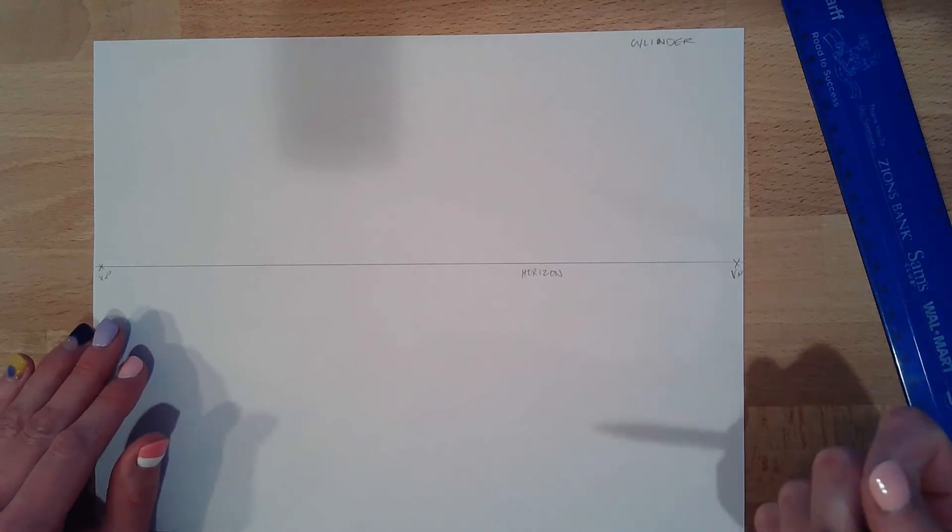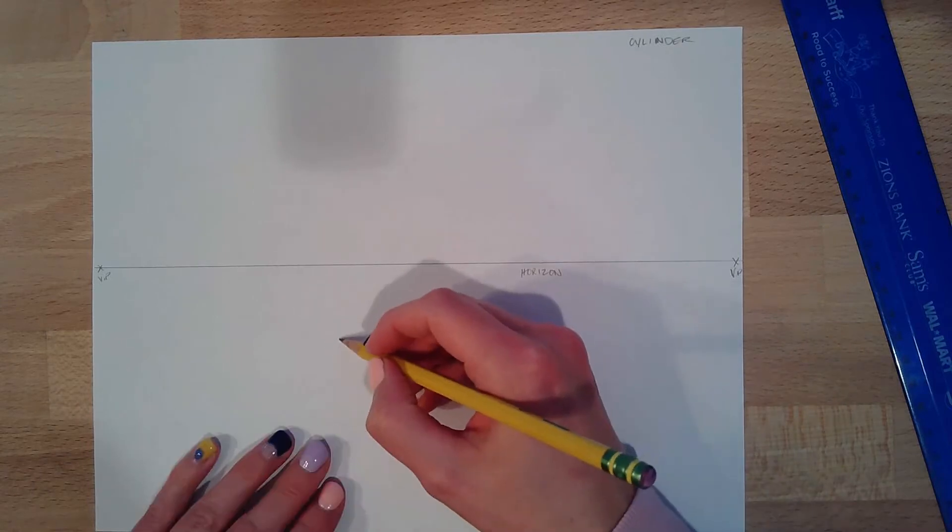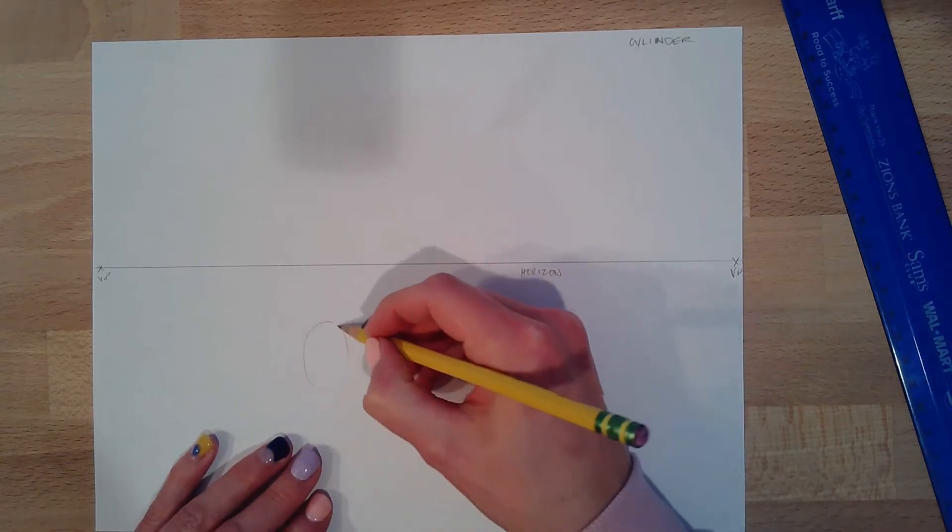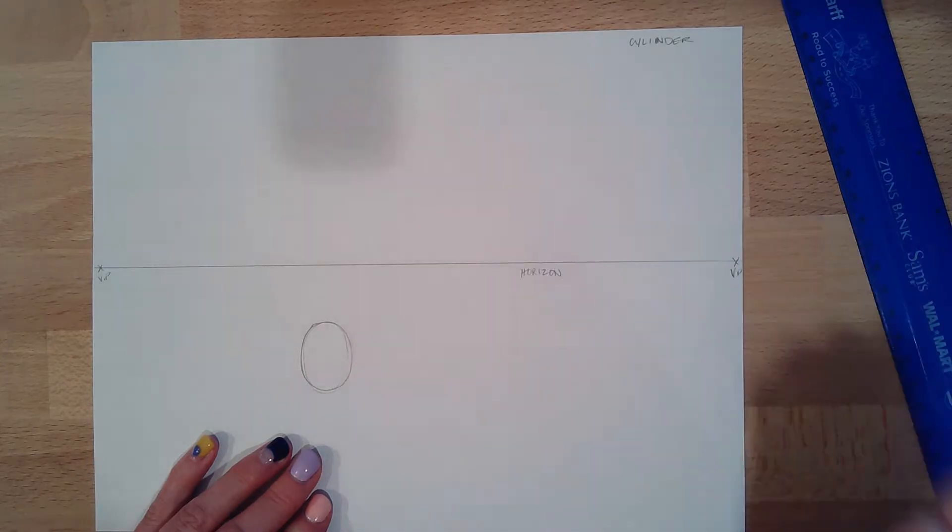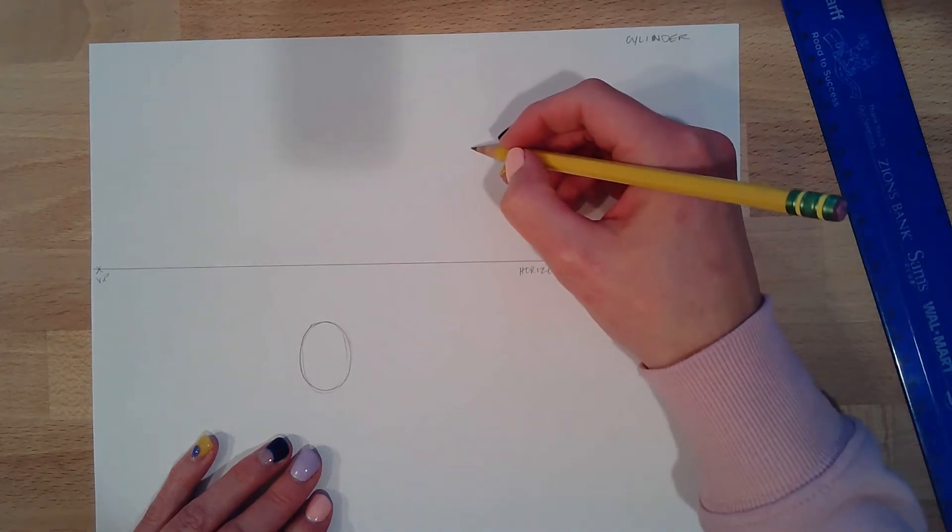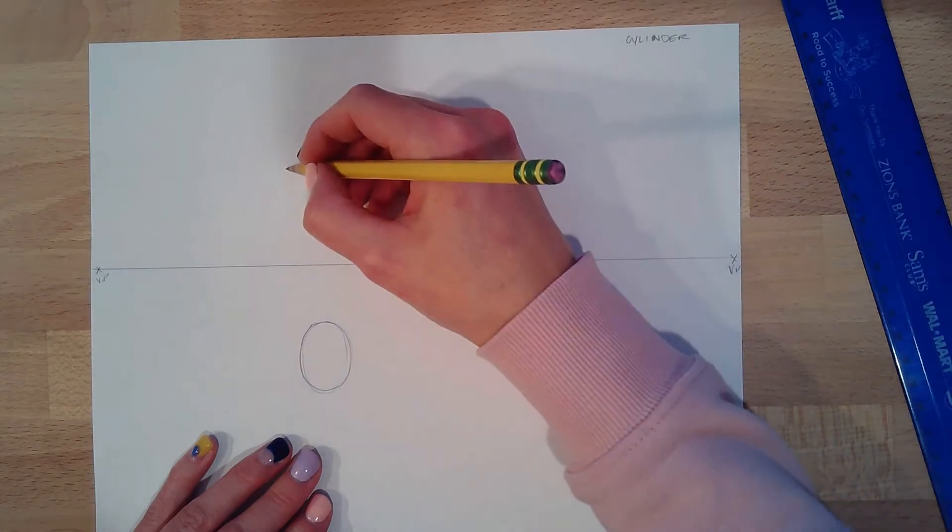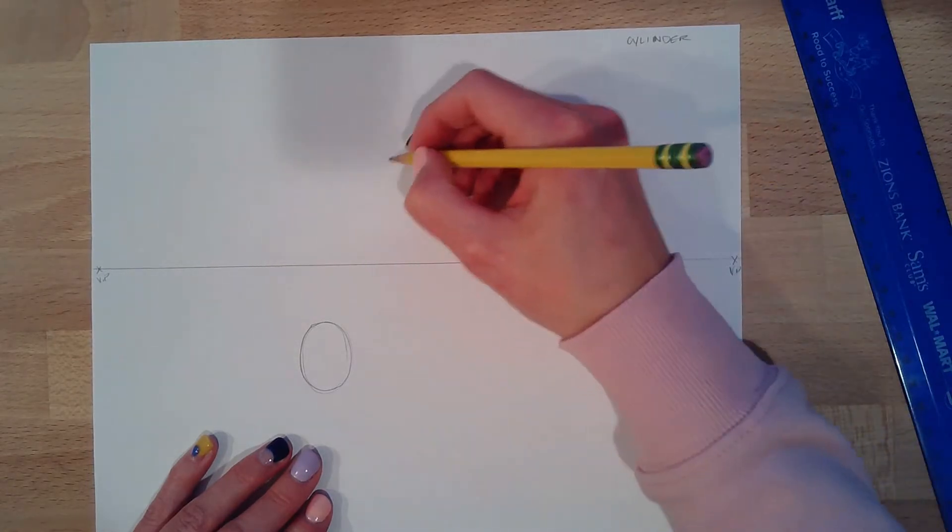Cylinder using a vanishing point. Pretty simple. The first thing you want to do is have a nice ellipse. It can be a perfect circle, it can be more of an oval, you can decide. And I will show you one above the horizon as well.